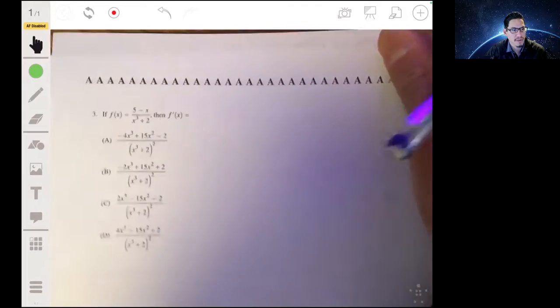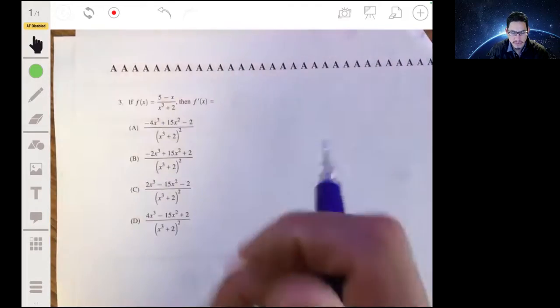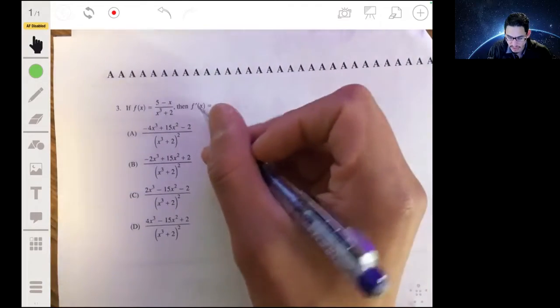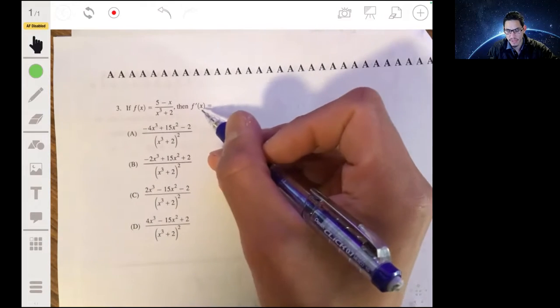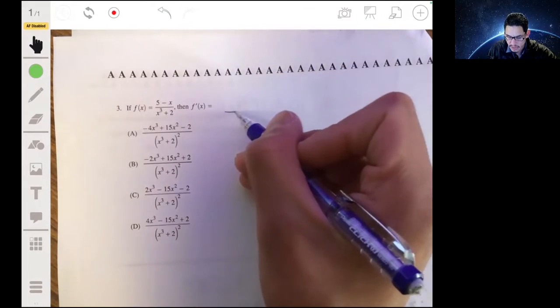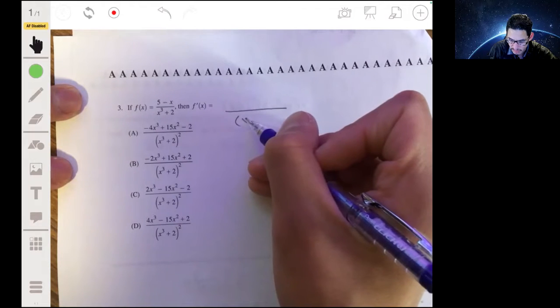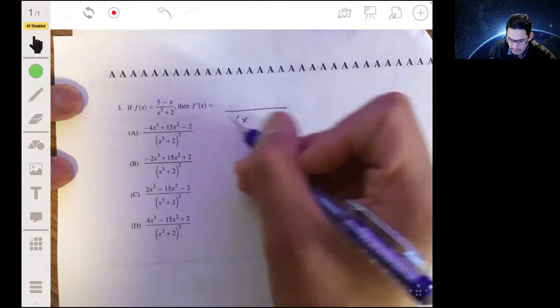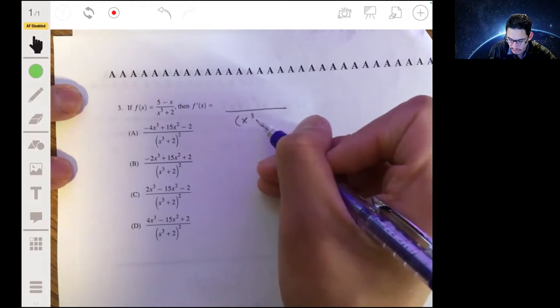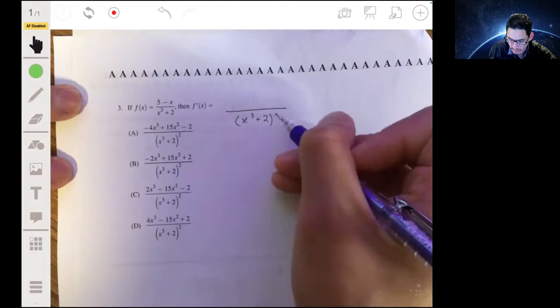Problem three. Okay, this is where we're going to use the quotient rule. So we're going to have that the derivative of f will be the denominator squared. So the denominator will be squared, so we just put all that in parentheses to the second power.